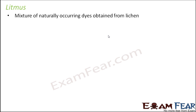Litmus is a mixture of naturally occurring dyes obtained from lichen. Lichen is the symbiotic association between fungi and algae, found on the bark of trees. Litmus looks like a powder — similar to how dyes come in many different colors. The most commonly seen form is red litmus, which is a powdery substance.